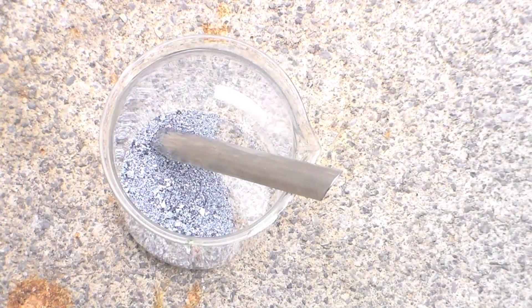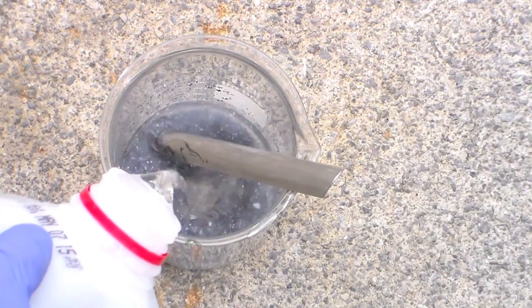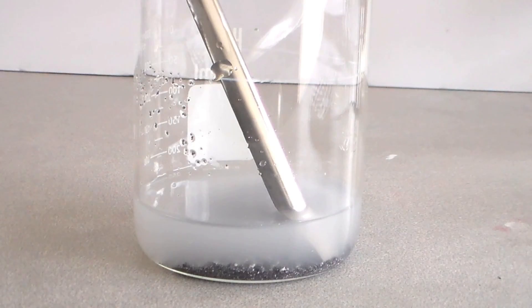To remove the magnesium and magnesium oxide impurities, I will simply add water to the mixture. Both of these dissolve in water.